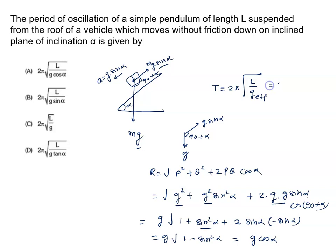The final answer is 2 pi root L upon g cos alpha. When we see the options, option A is the correct answer.